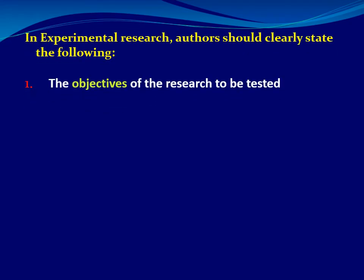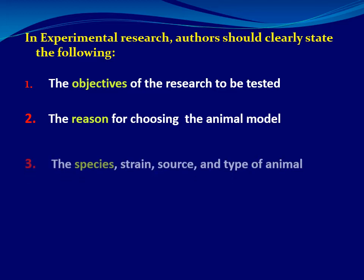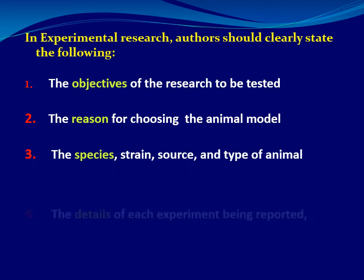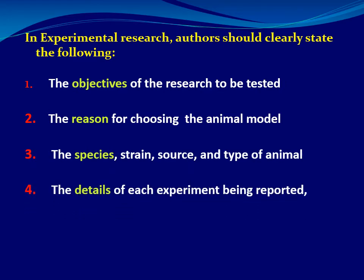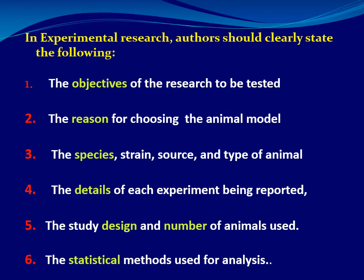In experimental research, authors should clearly state: the objectives, research hypothesis, and research questions; the reason for choosing the animal model, species, strain, source, and type of animal; details of each experiment reported; the study design and number of animals (sample size); and the statistical methods used for analysis of results.